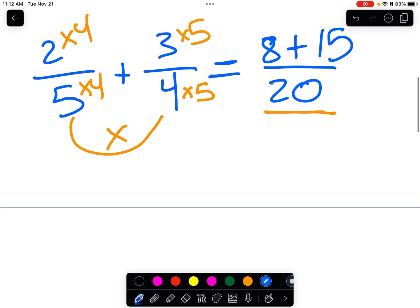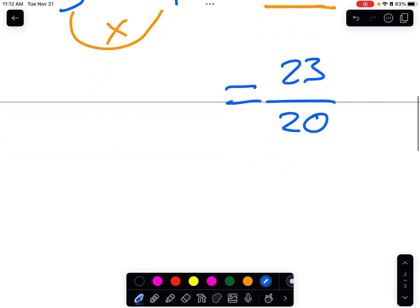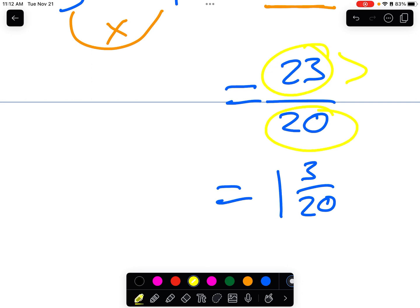And that gives us 15. 8 plus 15, that's 23. So the answer is 23 20ths or 1 and 3 20ths. Why? Because whenever we have a fraction where the numerator is greater than the denominator, we know that it's larger than one whole and we can turn it into a mixed fraction.